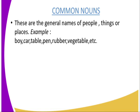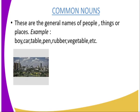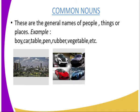Common nouns are the general names of people, things, or places. Examples include: boy, car, table, pen, rubber, and vegetable. Unlike proper nouns, common nouns are not specific. When we talk of a boy, it can be any boy. A car — we have different types of cars. A table, a pen, a rubber, and vegetables — these are all general, non-specific names.